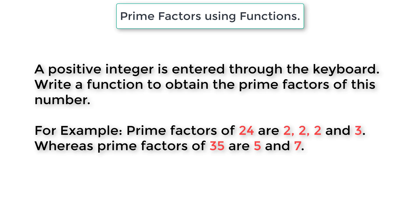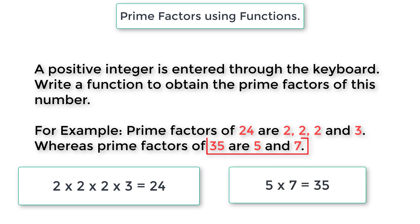For example, prime factors of 24 are 2, 2, 2 and 3, whereas prime factors of 35 are 5 and 7. So if we multiply 2, 2, 2 and 3 we will get 24, and if we multiply 5 and 7 we will get 35.